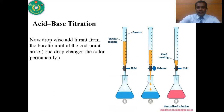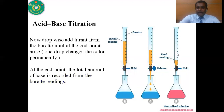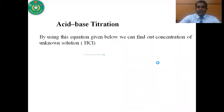Now, dropwise add titrant from the burette until the end point arises. What is the end point? The end point is the point when the addition of a single drop of titrant changes the color of the solution permanently. At the end point, we stop the falling of solution from the burette. The total amount of base from the burette we can determine, and by using the equation given below, we find out the concentration of the unknown solution.